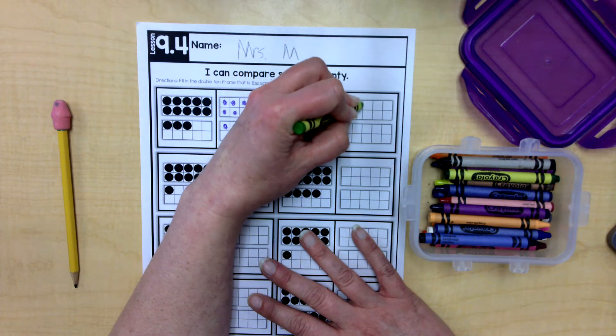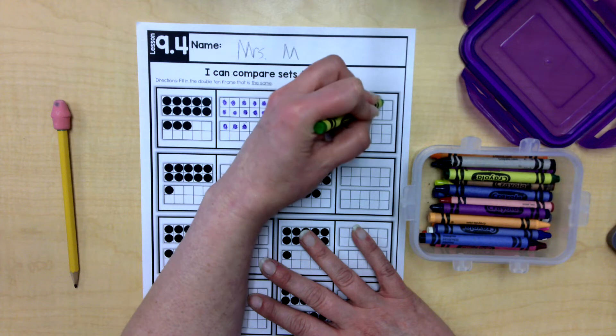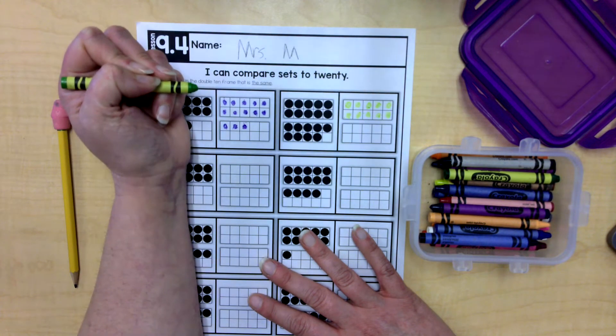One, two, three, four, five, six, seven, eight, nine, and 10. Okay.